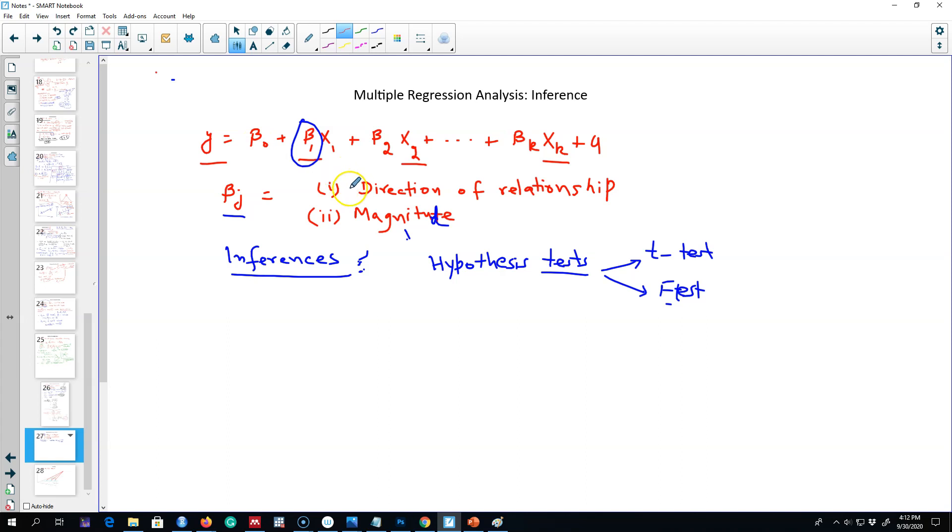We already spent considerable time talking about direction and magnitude of the relationship in chapter 3. In this chapter, I'm going to talk about the statistical inferences about these beta coefficients.